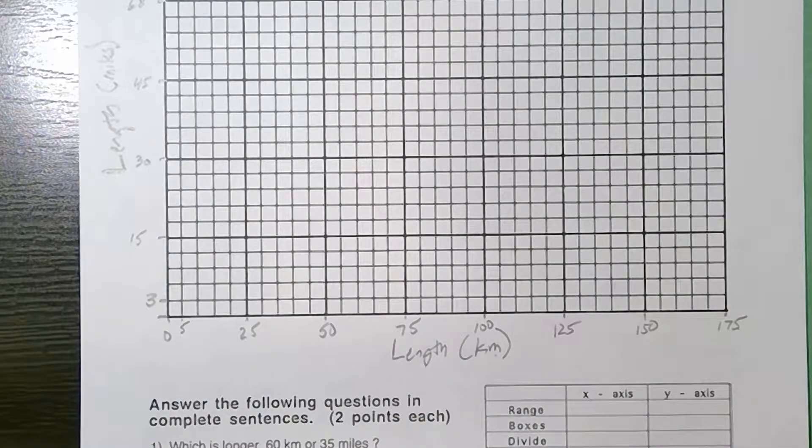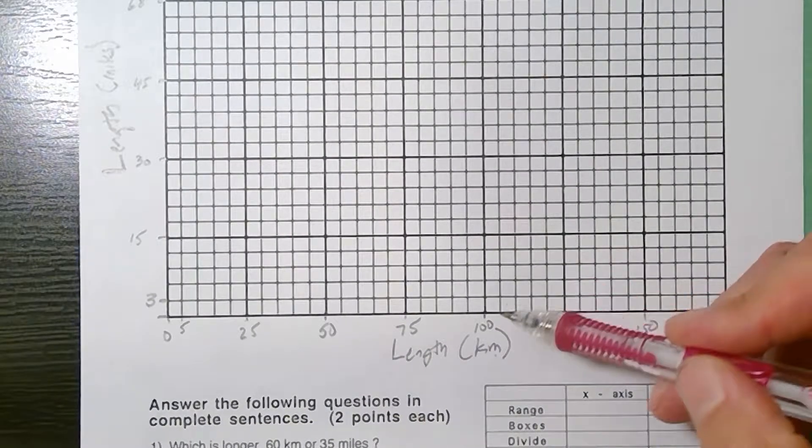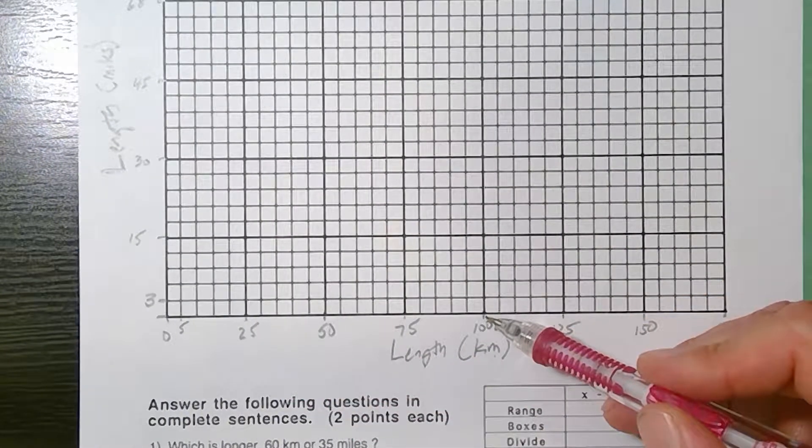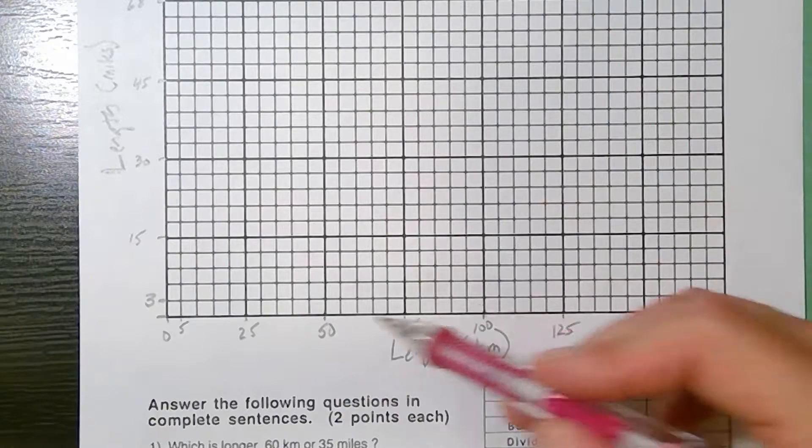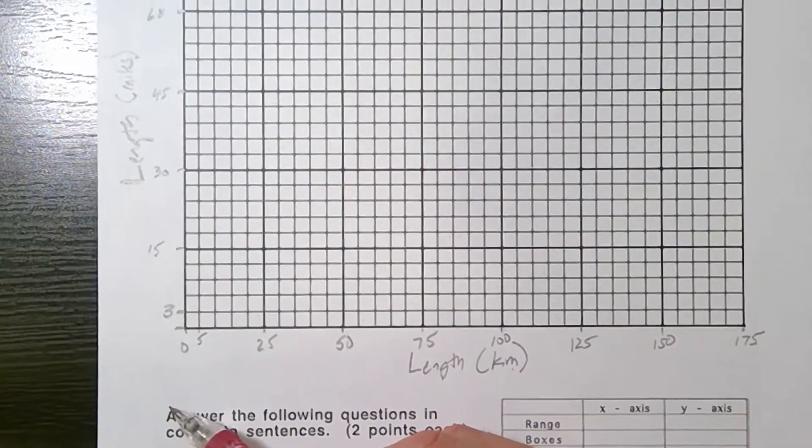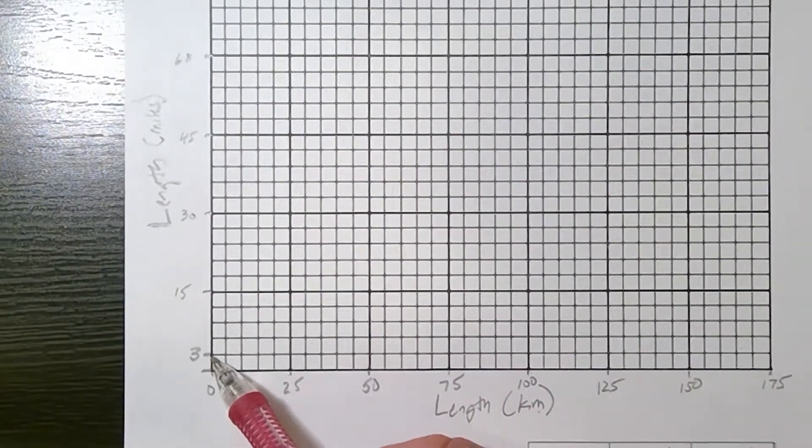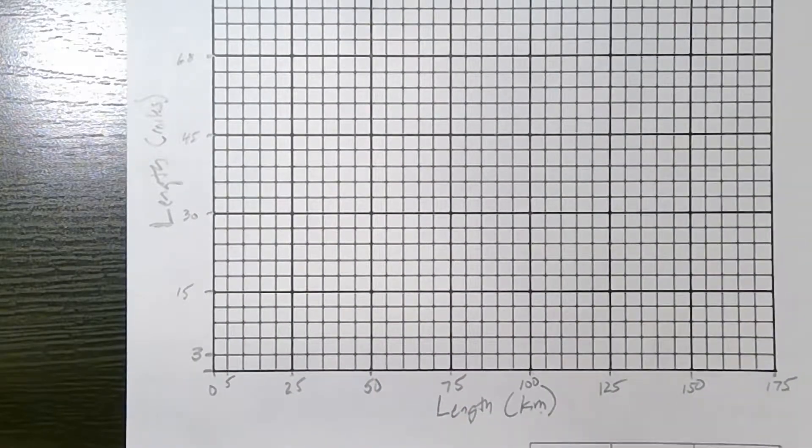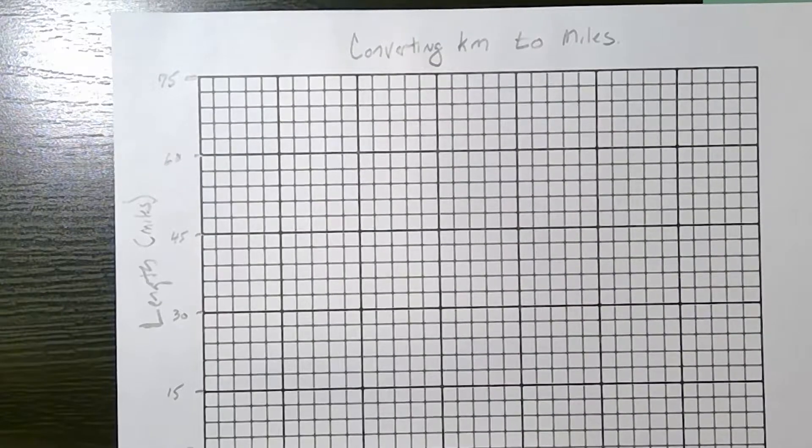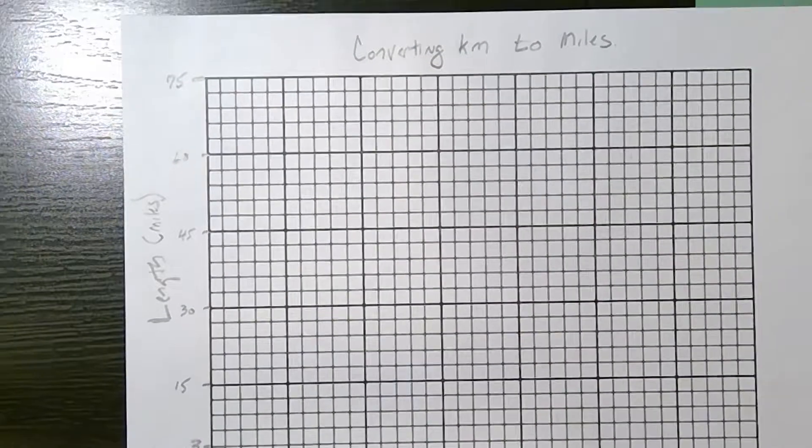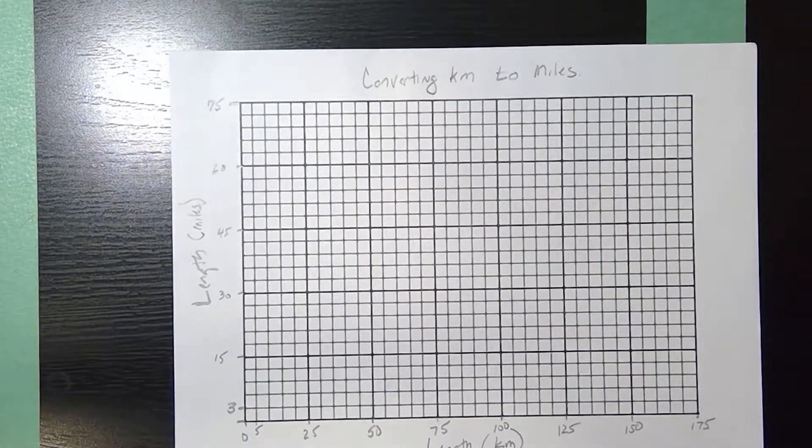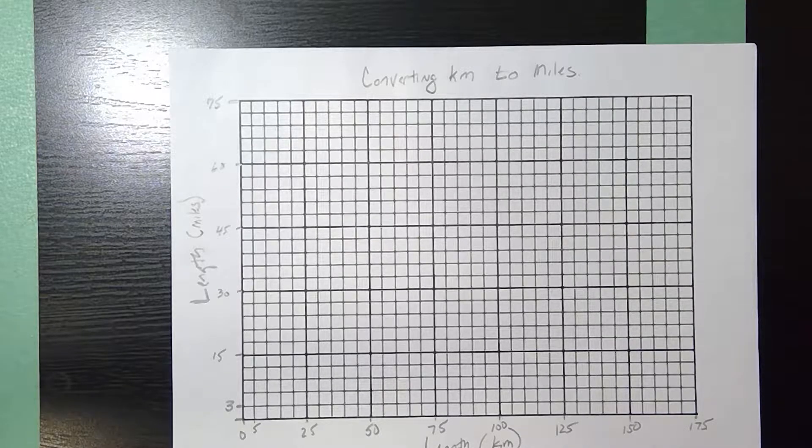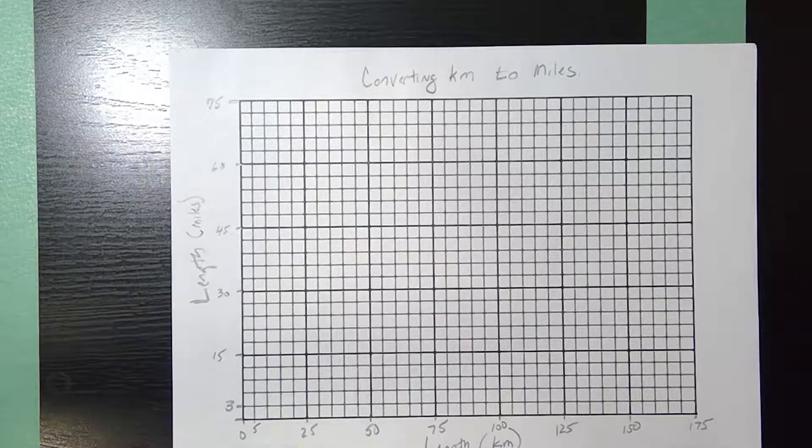Our data goes up to 100. So this graph is going to be more than 50% of the way, but it's fairly short. Going vertically, if every box is 3 and each dark line is 15, this is going to go all the way up to 75. An appropriate title, this is another conversion graph. So we're converting length in kilometers to length in miles.